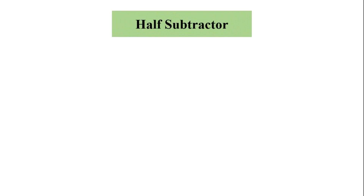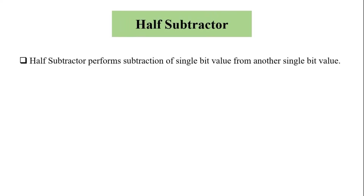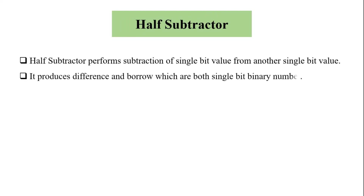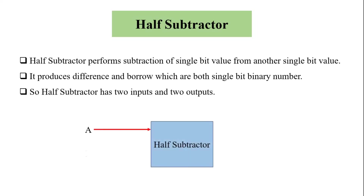First we will perform the half subtractor circuit. Half subtractor performs subtraction of a single bit value from another single bit value. It produces difference and borrow, which are both single bit binary numbers. So half subtractor has two inputs and two outputs. This is the block diagram of half subtractor where A and B are inputs and difference and borrow are the outputs.